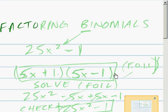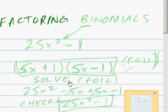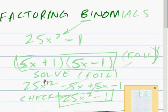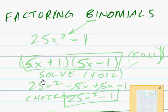Factoring binomials. We have a binomial that looks like this: 25x squared minus 1. And just like we've seen earlier, binomial means 2, and here's the 2.